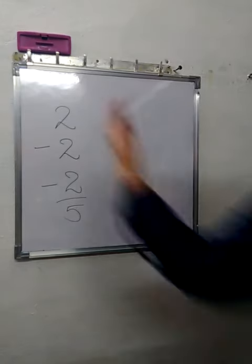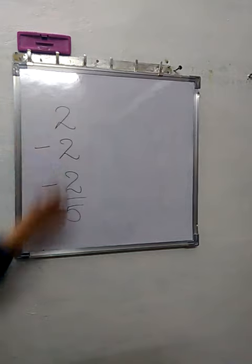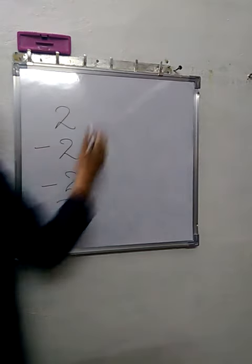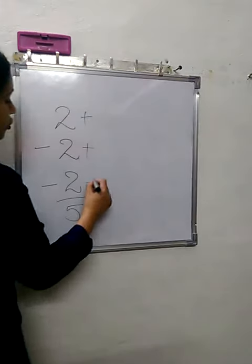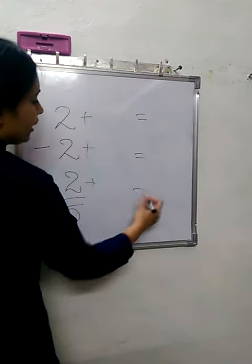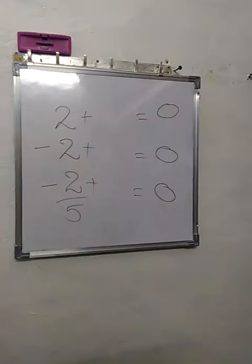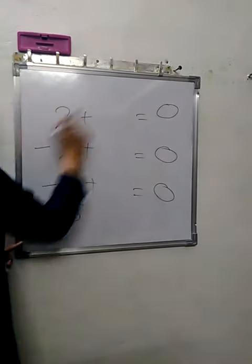Once again taking the same example - whole numbers, integers, rational numbers. So now what should you add here so that you get the answer 0? Anything? 2.